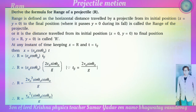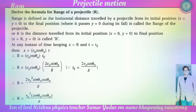Range R is defined as the horizontal distance traveled by the projectile from its initial position (x equals 0, y equals 0) to the final position where y equals 0 again. At x equals R, t equals T_f. Using x equals v-zero cos theta-zero times t, we get R equals v-zero cos theta-zero times T_f. Substituting T_f equals 2 v-zero sin theta-zero divided by g, we get R equals v-zero cos theta-zero times (2 v-zero sin theta-zero / g).